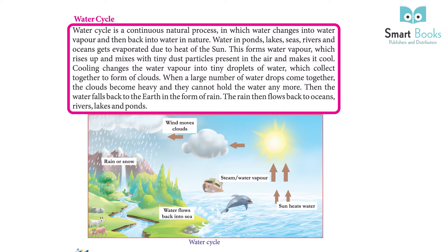In nature, water in ponds, lakes, seas, rivers, and oceans gets evaporated due to the heat of the Sun. This forms water vapor, which rises up and mixes with tiny dust particles present in the air, making it cool.